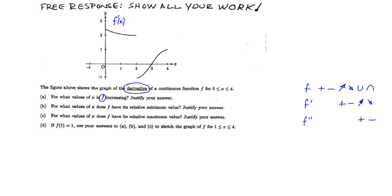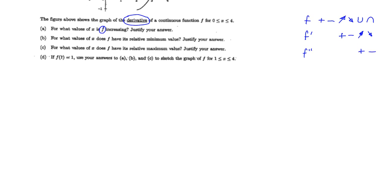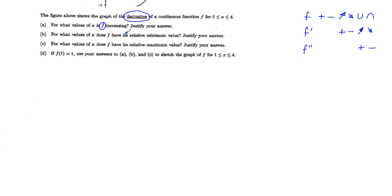What we're going to do is pre-justify everything. I'm going to scroll up and exclude the function from view and just look at our little chart. For Part A — what values of x is f increasing? — to have f increasing we have to have f prime positive. The justification is: because f prime of x is greater than zero, f is increasing on a certain interval.